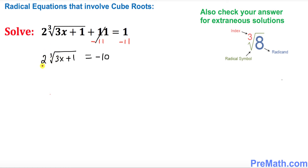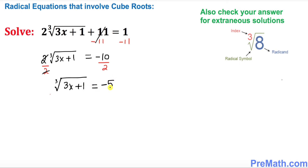Since the cube root is multiplying by 2, I want to divide both sides by 2. The 2s cancel out, and the cube root of (3x + 1) equals negative 5.